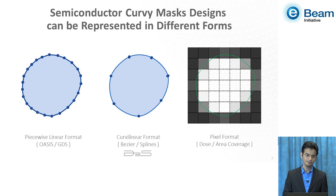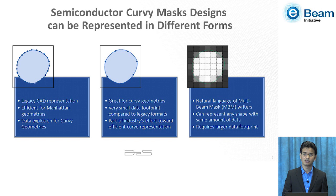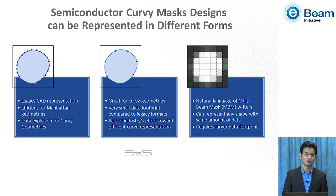Semiconductor mask shapes can be represented in three different forms. You have the piecewise linear format, you have the curvilinear format, and you also have the pixel-based formats. The piecewise linear format, which is the legacy format like OASIS or GDS, is very efficient to represent Manhattan geometries. However, it becomes really inefficient when you're trying to represent curvilinear geometries because of the data explosion. In curve-based formats, you can represent curvilinear geometries very efficiently — it reduces the data volume required to save on disk and provides the same accuracy as the piecewise linear format. That's why D2S supports the industry's effort towards an efficient Bezier-based curve representation.